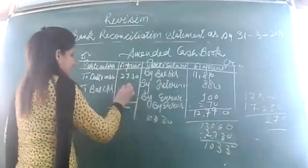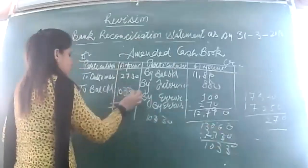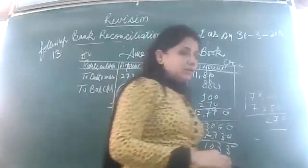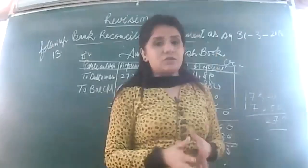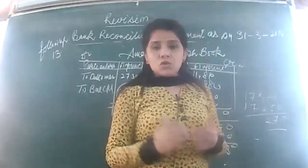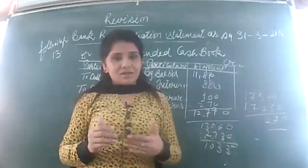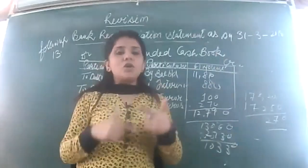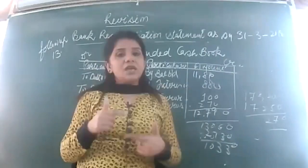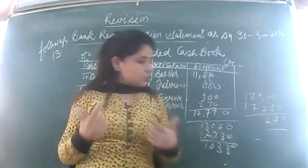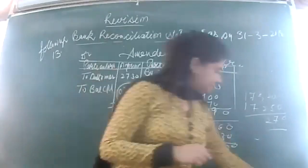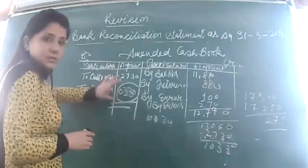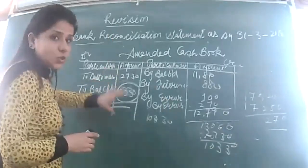We arrived at the same answer as in the book: 10,330, which is going to be the negative balance. So whatever I entered in my amended cash book, I will not be repeating those items in my BRS. Let's now prepare the BRS and keep this balance in mind — it is going to be the negative balance. I will be thinking as per the passbook.